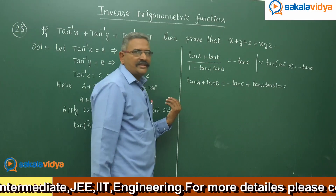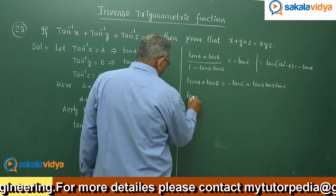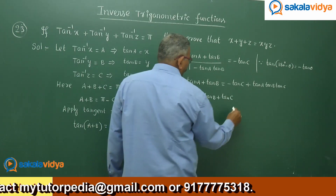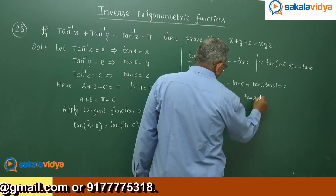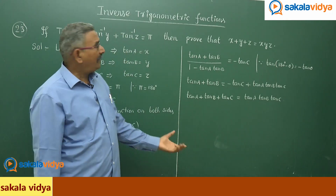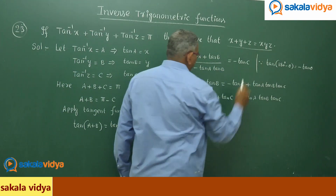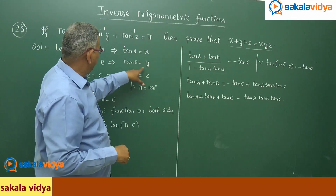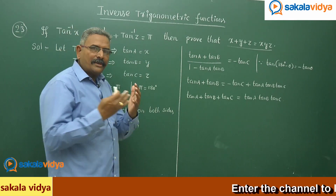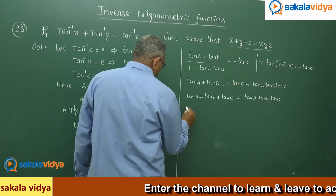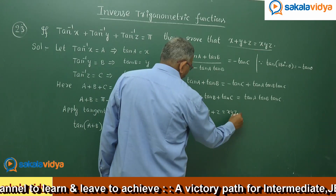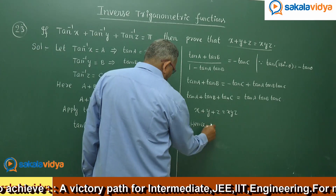Transposing −tan c to the left-hand side, we get tan a + tan b + tan c = tan a · tan b · tan c. Now replacing tan a by x, tan b by y, and tan c by z, we get x + y + z = xyz. Hence it is proved.